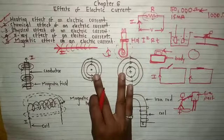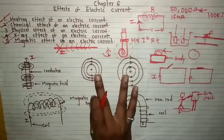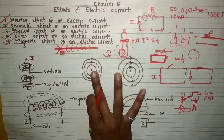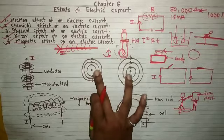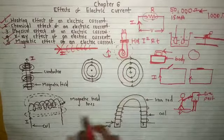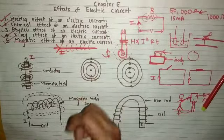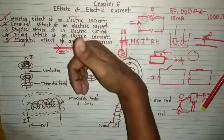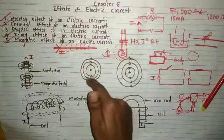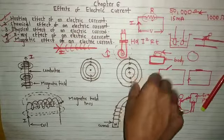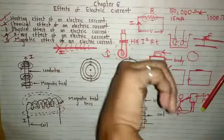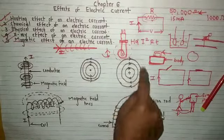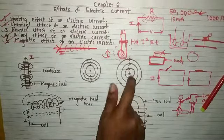Now consider these two figures: there is a dot and a cross. The dot symbol means the current is coming out, and the cross means the current is going in. When current is coming out of the page, according to the right-hand rule, the curved fingers curve in one direction — giving an anticlockwise direction. When the cross symbol means current is going inside, the thumb indicates current going in and the curved fingers indicate the other direction — giving a clockwise direction.